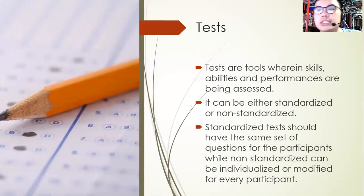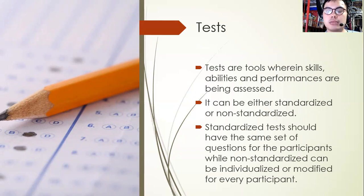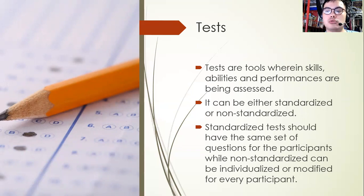Tests are tools wherein skills, abilities, and performances are being assessed. They can be either standardized or non-standardized. Standardized tests are departmental and uniform — they have the same set of questions for all participants. Examples include college entrance exams and quarterly exams. Non-standardized tests can be individualized or modified for every participant, such as for students with diverse needs depending on age or ability. Standardized tests are considered fair because the questions are the same for all, while non-standardized tests can be seen as technically unfair due to differing question levels and approaches.